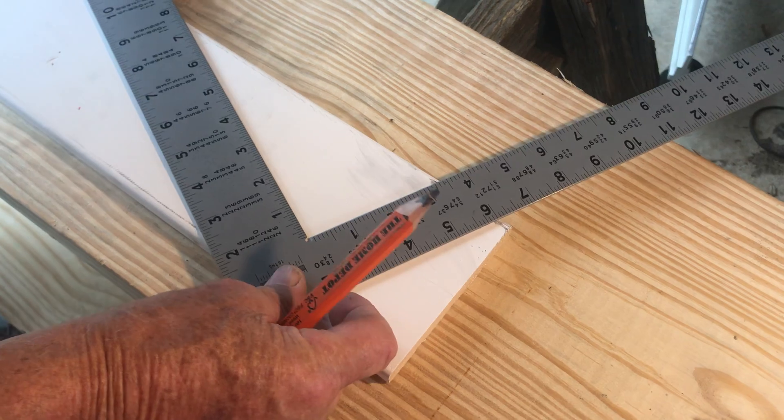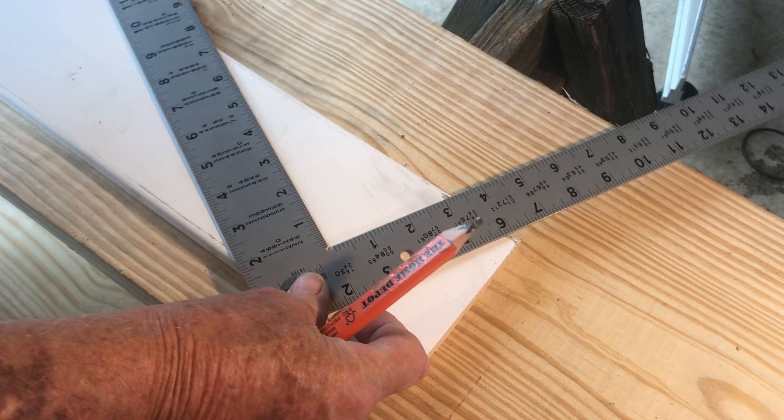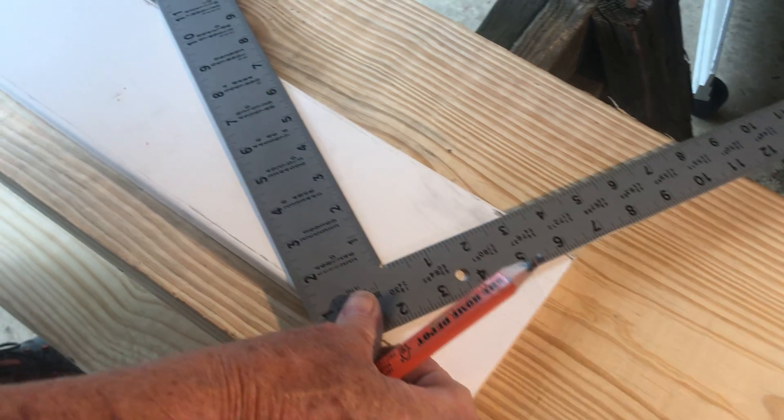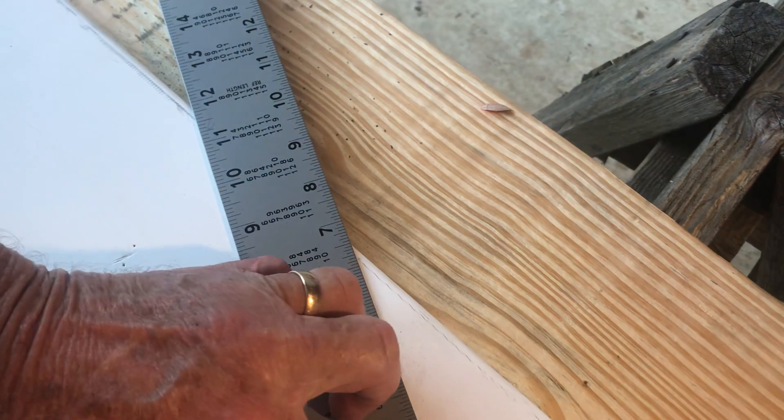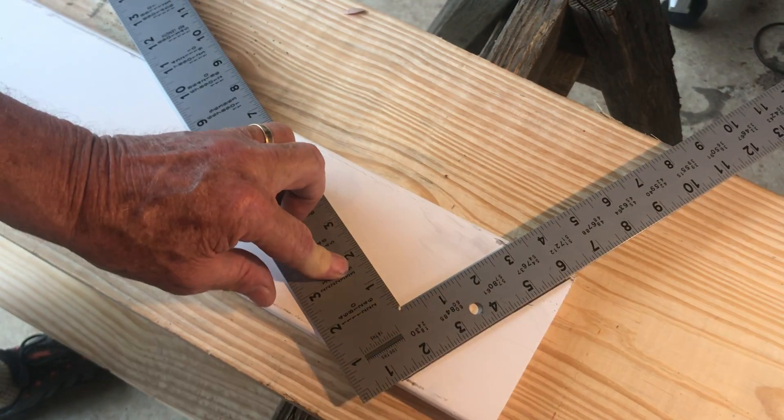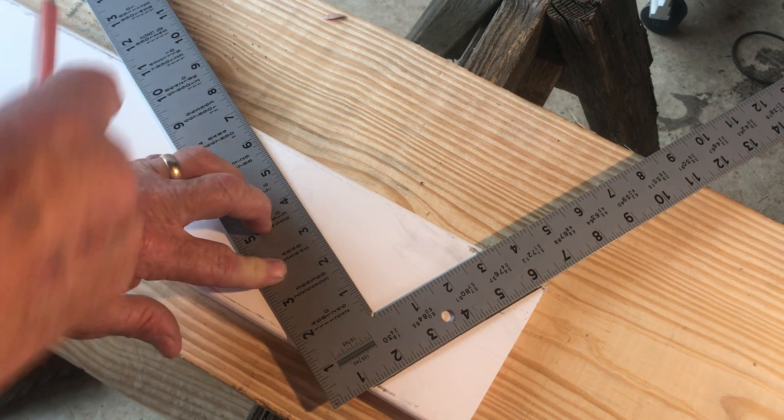So I'm going to put 6 inches here, right along this top edge, and 12 right there. And I'm going to scribe, that's the center line of the building.